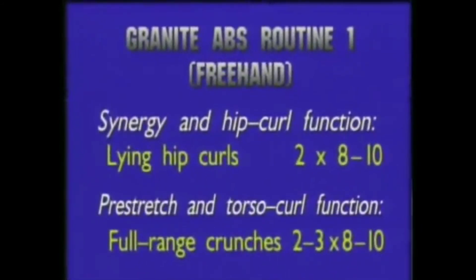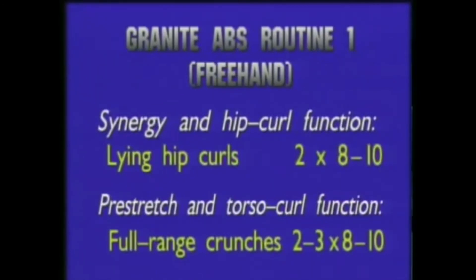Granite Abs Routine One — Free Hand Synergy: Lying hip curls, two sets of eight to ten reps each. Full range crunches with pre-stretch and torso curl function, two to three sets of eight to ten reps each.